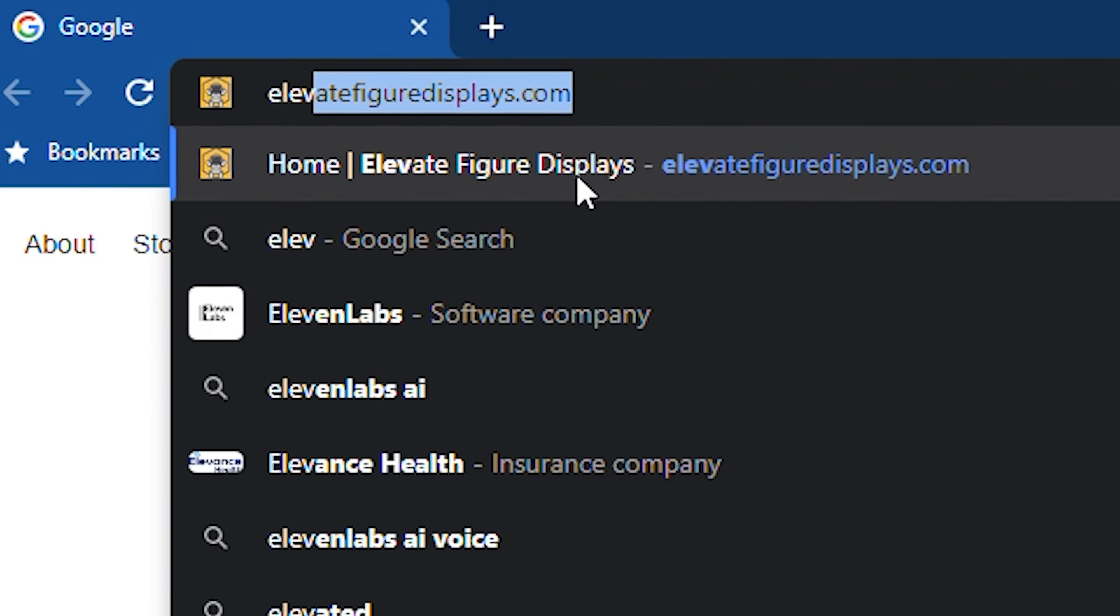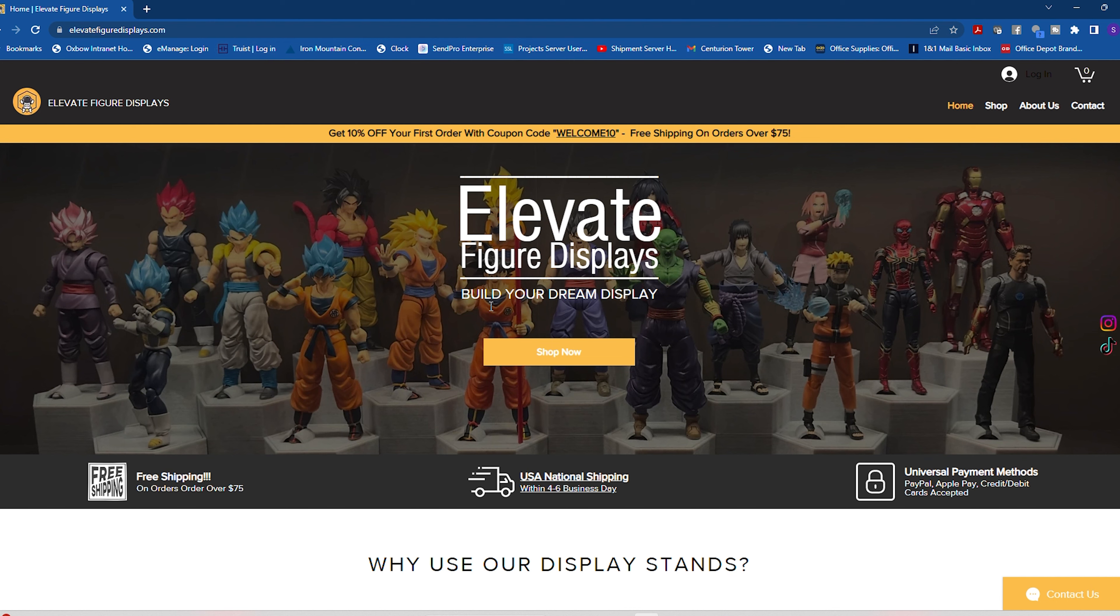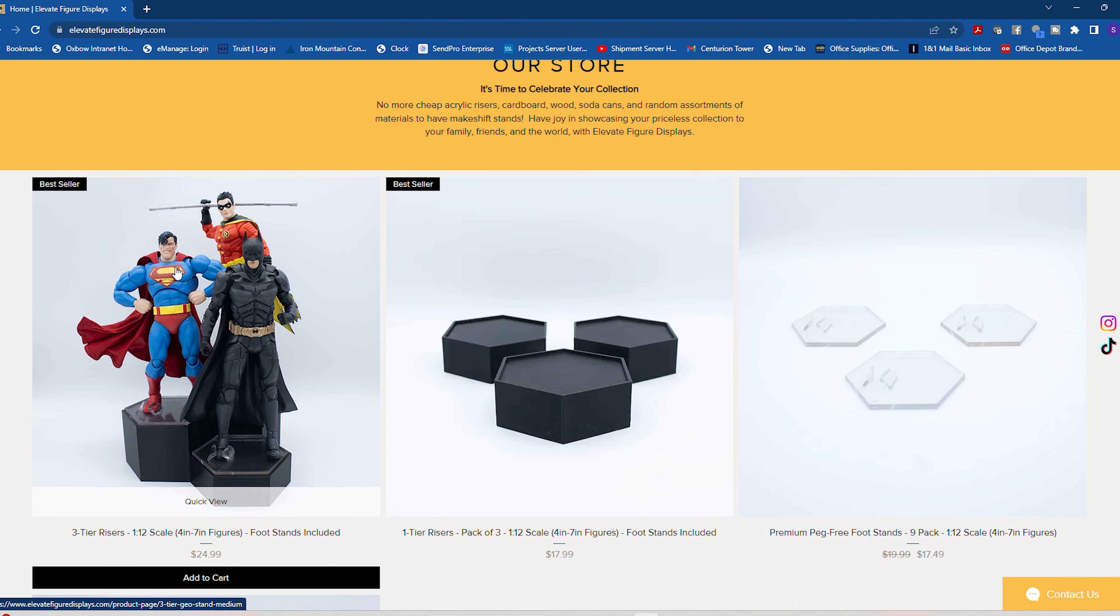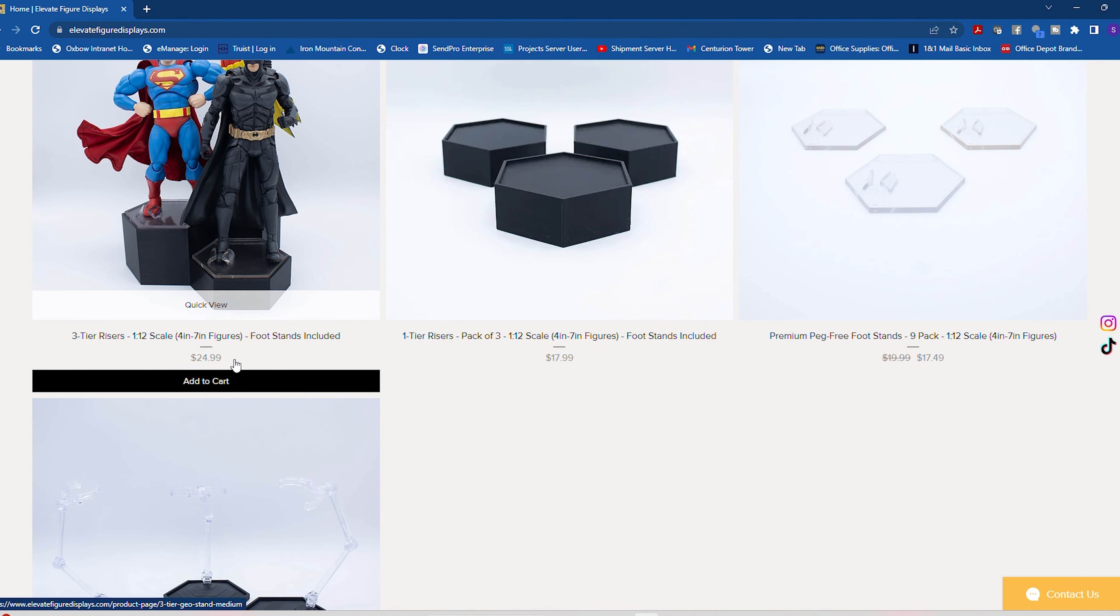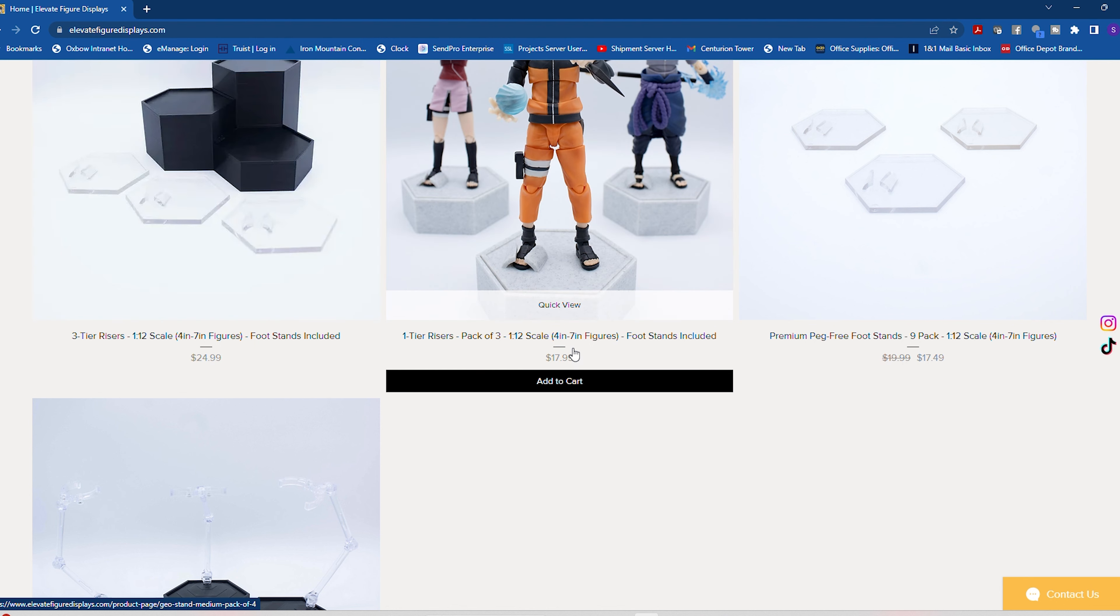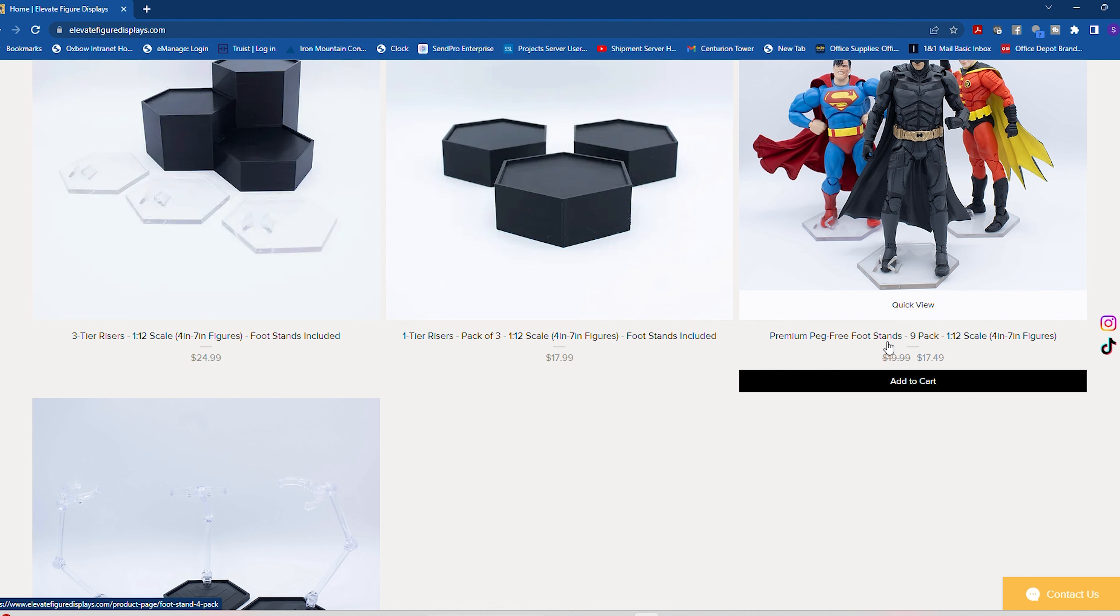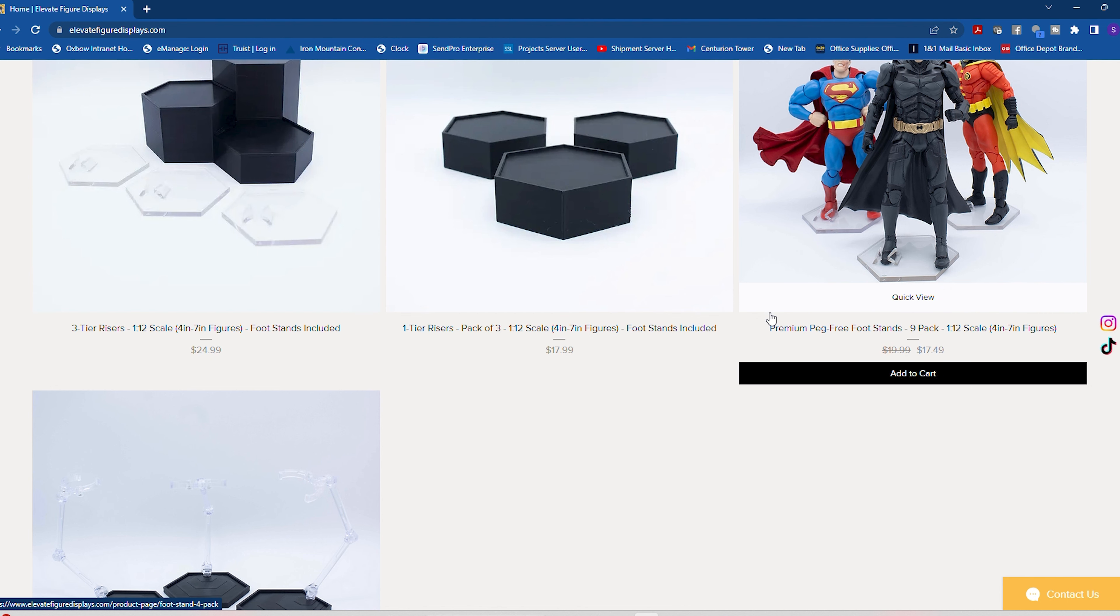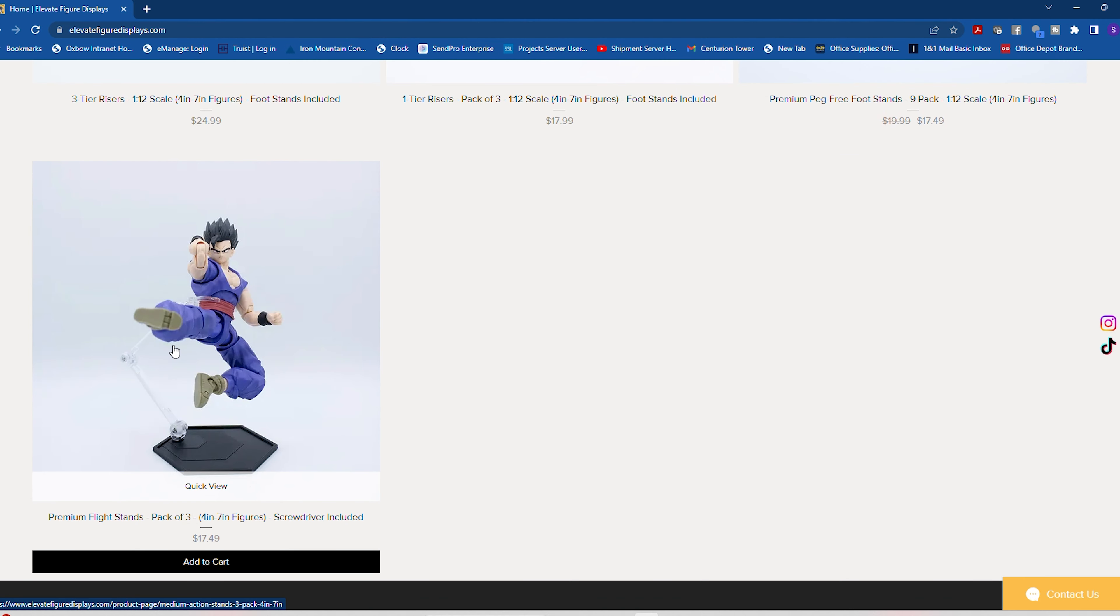If you guys are interested, go check out their website. It's elevatefiguredisplays.com. Once you're on the website, you hit Shop Now. It'll bring you to their store and show you all the options that they offer. They have the three tier foot stands, which is the one that I showed you in the video, for $24.99. Then they have the one tier risers, which is a pack of three, for $17.99. Then if you want those clear peg-free foot stands, they have those for a nine pack for $17.49. And if you're really interested in the flight stands, which I think are great, they come in a pack of three and those are also $17.49.